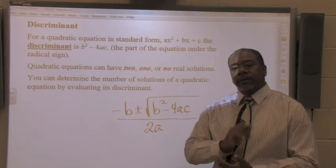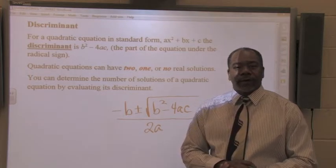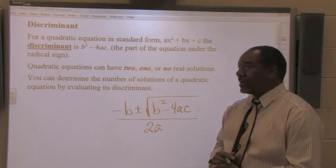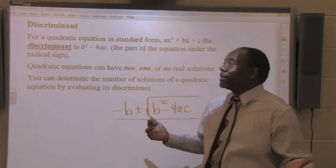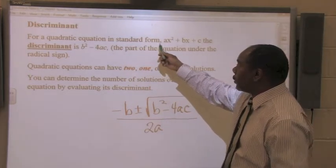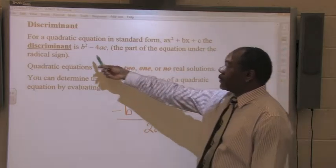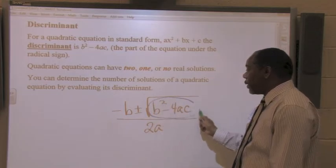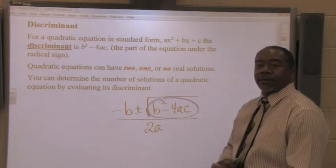Okay, we've looked at solving quadratics using the quadratic formula. Another great tool to understand and to use is the discriminant. Well, what is that? For a quadratic equation in standard form, the discriminant, b² - 4ac, is the part right here that's underneath the radical sign.